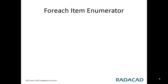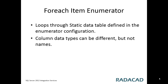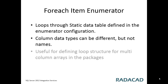First, what is the Item Enumerator? In the Item Enumerator you can loop through static data that is actually created in your package, manually defined by yourself, which can contain multiple columns. Each column can have a different data type — string, integer, date time. You can use this for looping through arrays that have multiple columns.